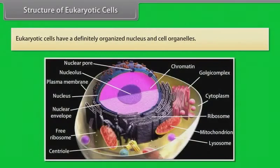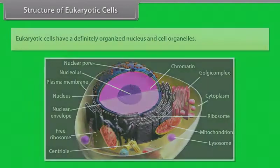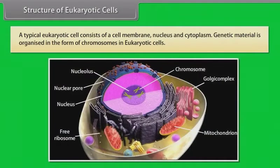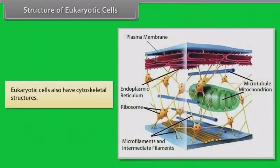Structure of eukaryotic cells. Eukaryotic cells have a definitely organized nucleus and cell organelles. These types of cells are found in many groups of algae except cyanobacteria, fungi, and other plants and animals. A typical eukaryotic cell consists of a cell membrane, nucleus and cytoplasm. Genetic material is organized in the form of chromosomes in eukaryotic cells. Eukaryotic cells also have cytoskeletal structures.